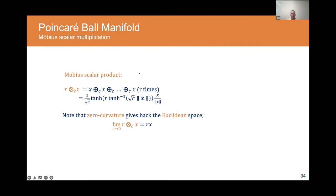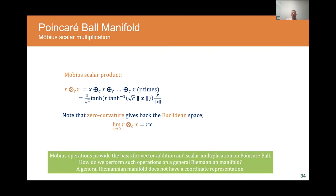Scalar multiplication in hyperbolic space is defined as repeated gyro addition, and similarly when curvature goes to zero you recover standard Euclidean scalar multiplication. We have now defined Möbius operations on the Poincaré ball in closed form. For operations on a general Riemannian manifold, which lacks a coordinate representation, we heavily leverage the notion of the tangent space.